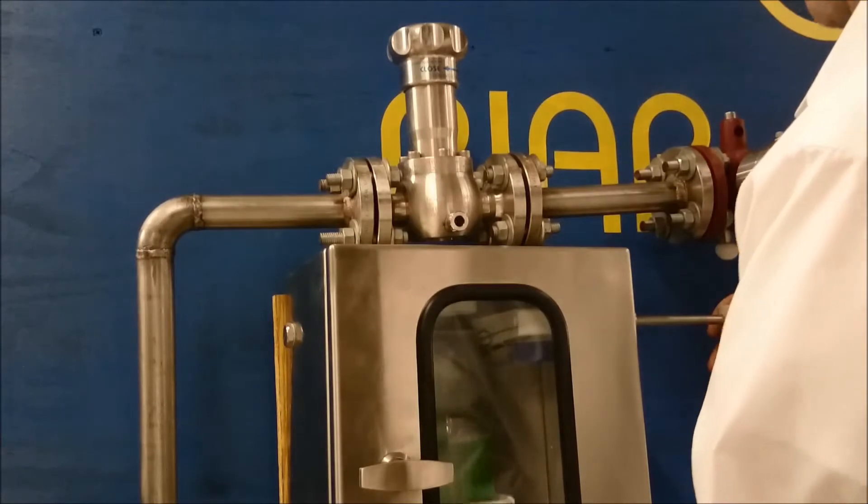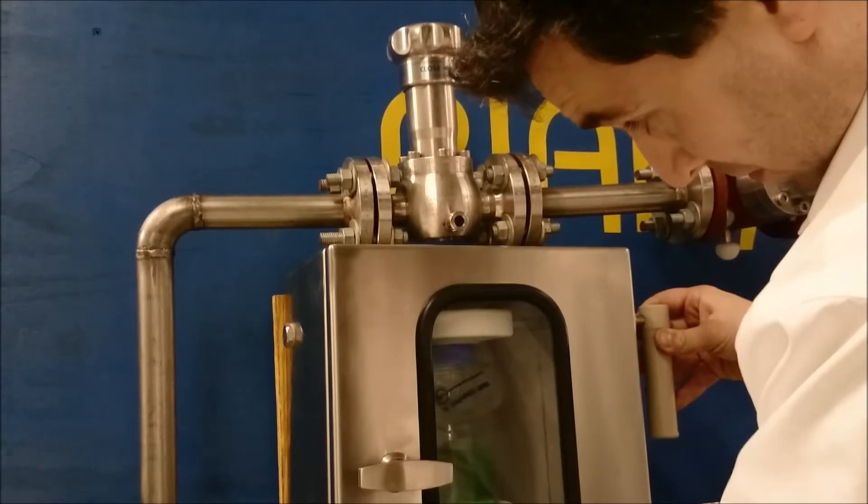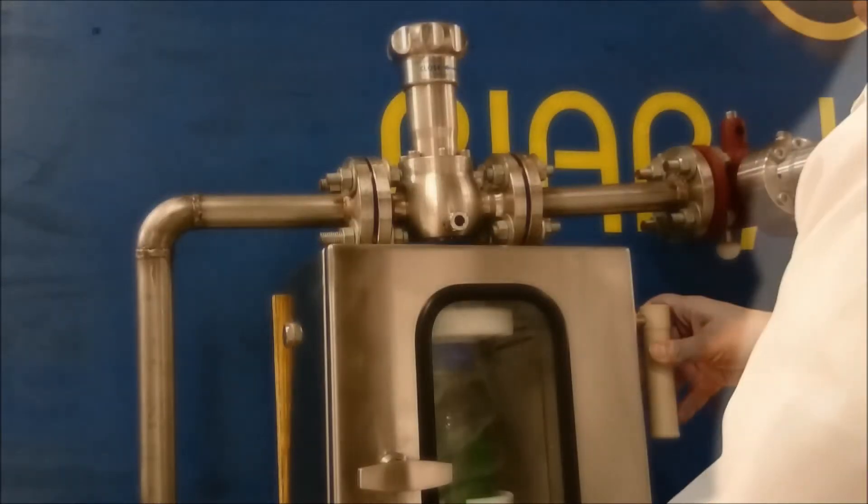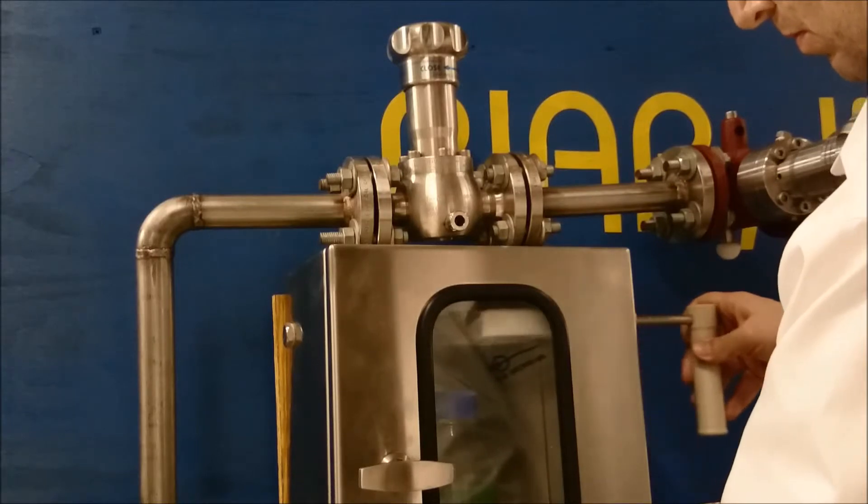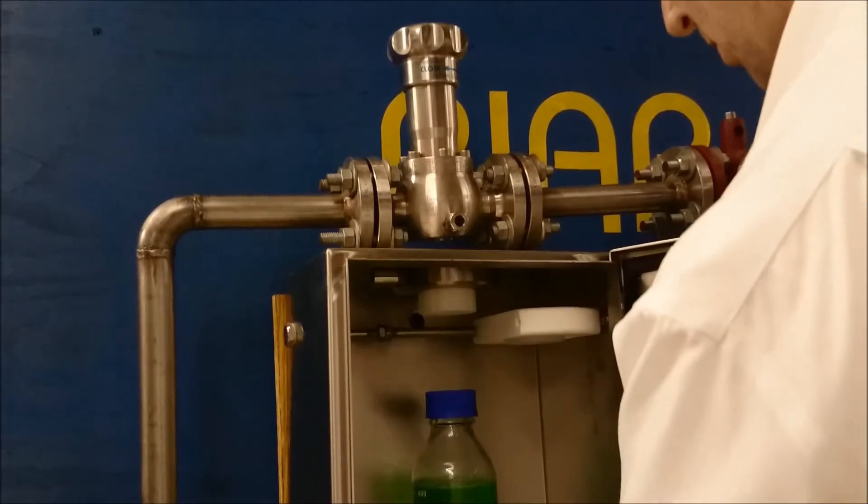He puts the safety cap back into place, pushes the bottle back up, and twists it in order to screw the safety cap onto it. It is now safe to remove the bottle with the sample in it from the Revo box.